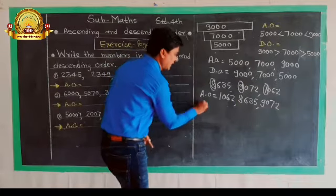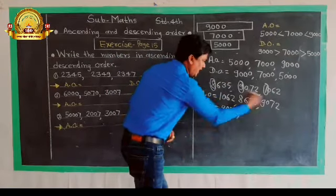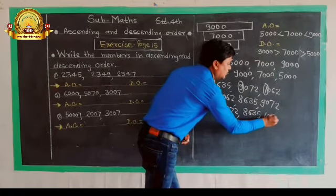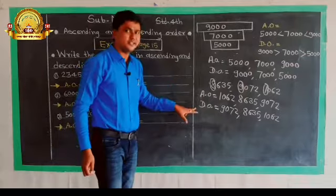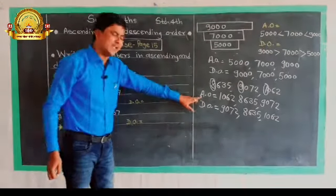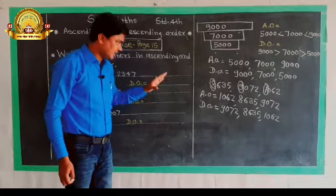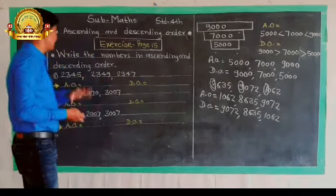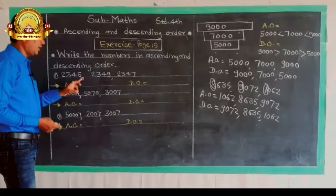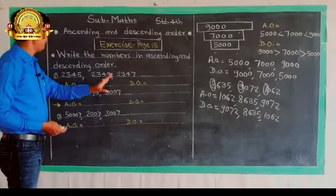When you have ascending order and descending order, you can solve in the same way. The next example has three numbers: 2,345, 2,349, and 2,347. All of these numbers are four-digit numbers.